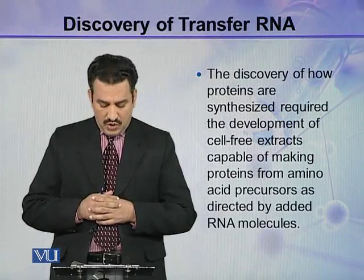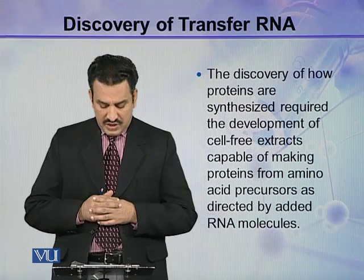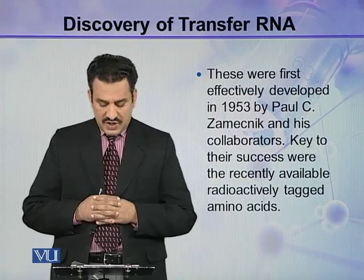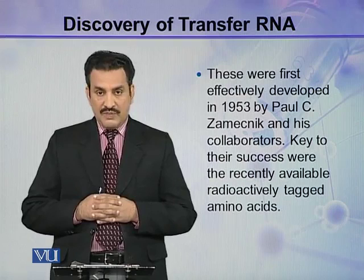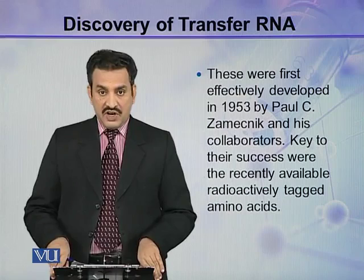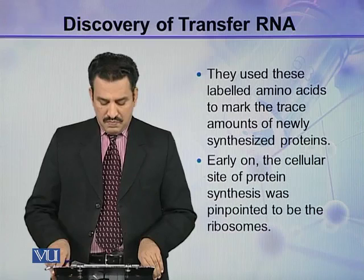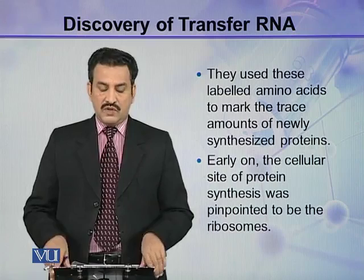The discovery of how proteins are synthesized required the development of cell-free extracts capable of making proteins from amino acid precursors as directed by added RNA molecules. These were first effectively developed in 1953 by Paul C. Zamecnik and his collaborators. Key to their success were the recently available radioactively tagged amino acids, which they used to mark the trace amounts of newly synthesized proteins.